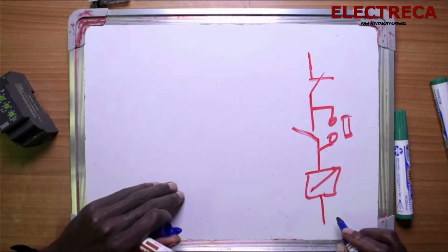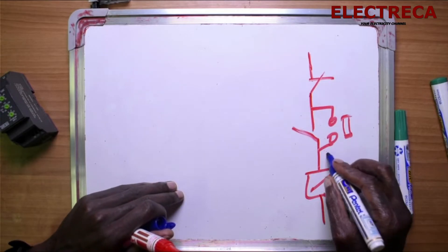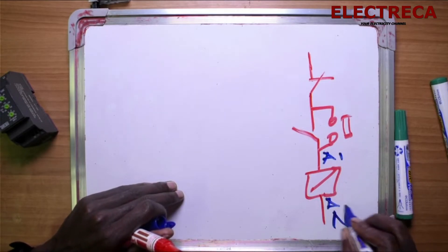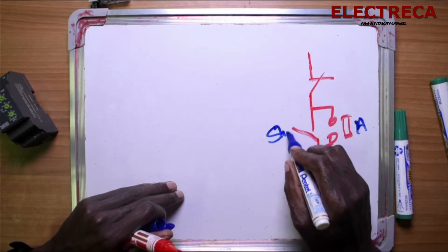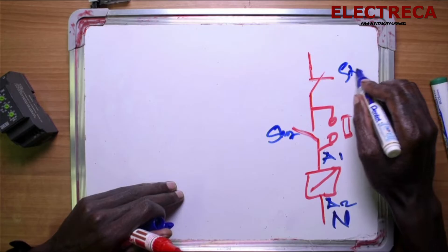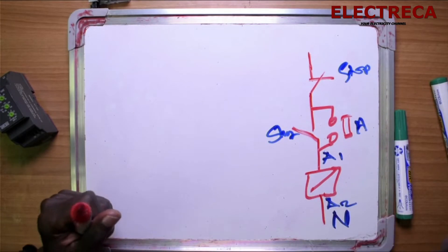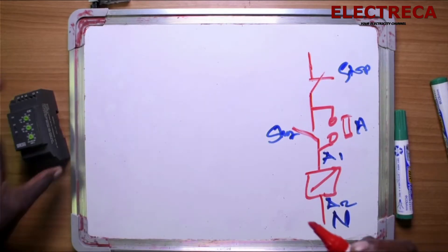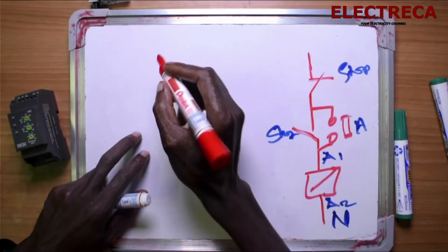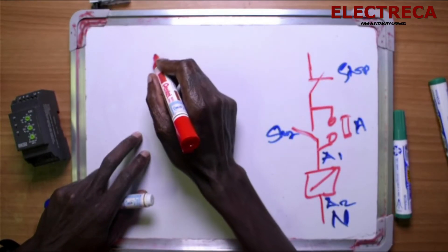So you have your N right there. This is A1, this is A2, you have H, start, and stop. Now we have this guy here and this guy looks like this, the contacts.